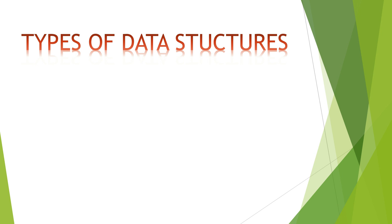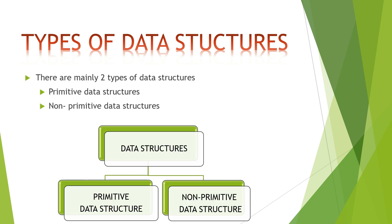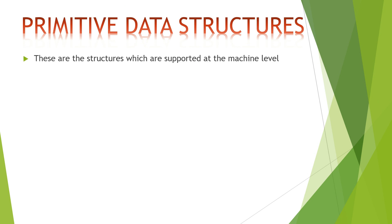There are mainly two types of data structures. The first one is primitive data structure and the second one is non-primitive data structure. Primitive data structures are structures which are supported at the machine level. They can be used to make non-primitive data structures.